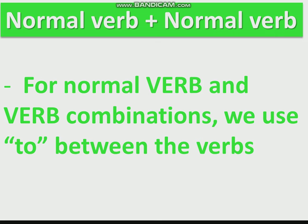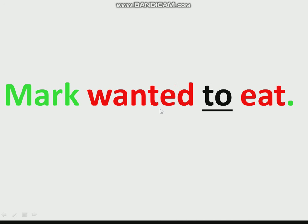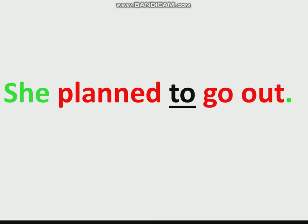For normal verb and normal verb combinations, we use 'to' between the verbs. For example: 'I like to ride my bike' — 'like' is a normal verb, 'ride' is a normal verb, so we use 'to' to separate them. 'Mark wanted to eat' — 'wanted' is a normal verb, 'eat' is a normal verb, so we use 'to.' 'She planned to go out' — 'planned' is a normal verb, 'go out' is a normal verb, so we use 'to' to separate them.